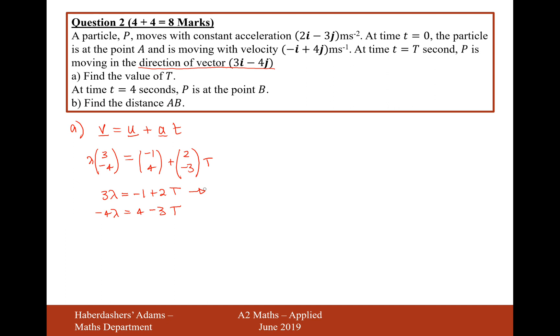In the first one, I can tell you that lambda is equal to -1+2T divided by 3. And in the second one, I can tell you that lambda is equal to 4-3T over -4. So given that these two things, lambda must equal lambda, I can say that -1+2T over 3 equals 4-3T over -4.